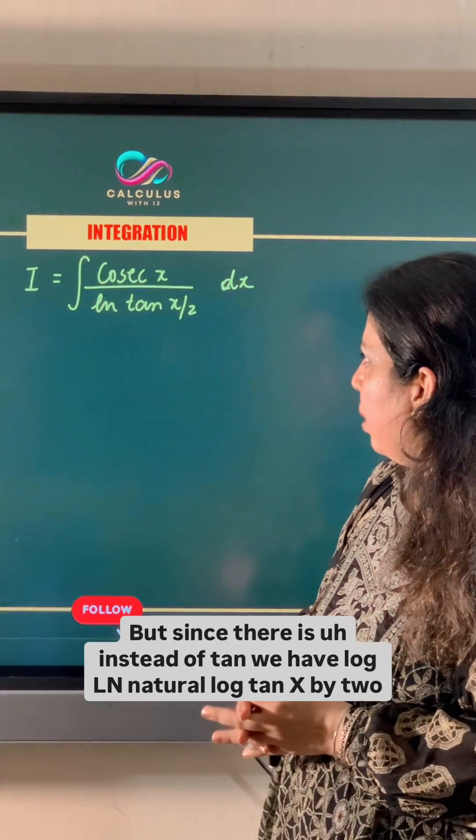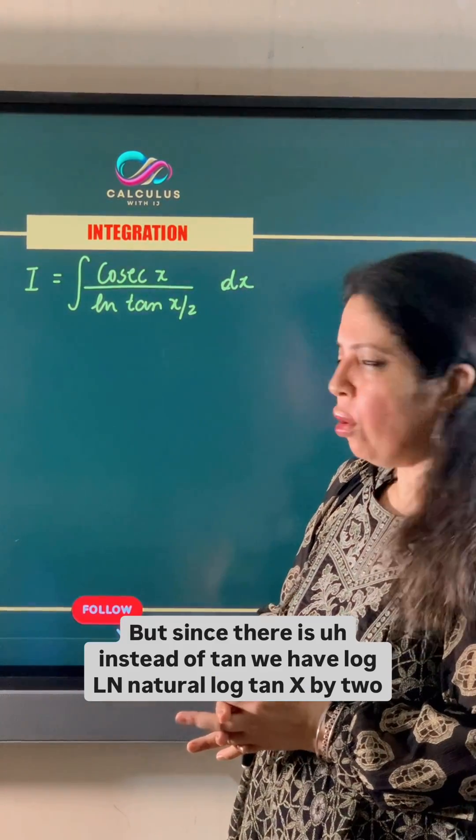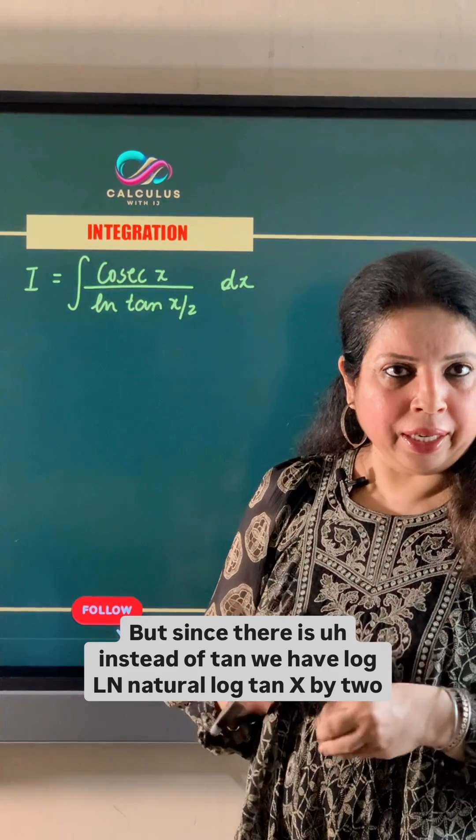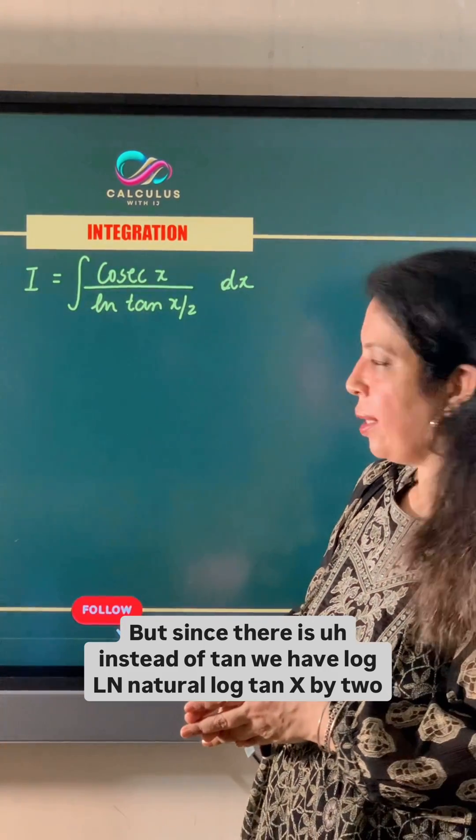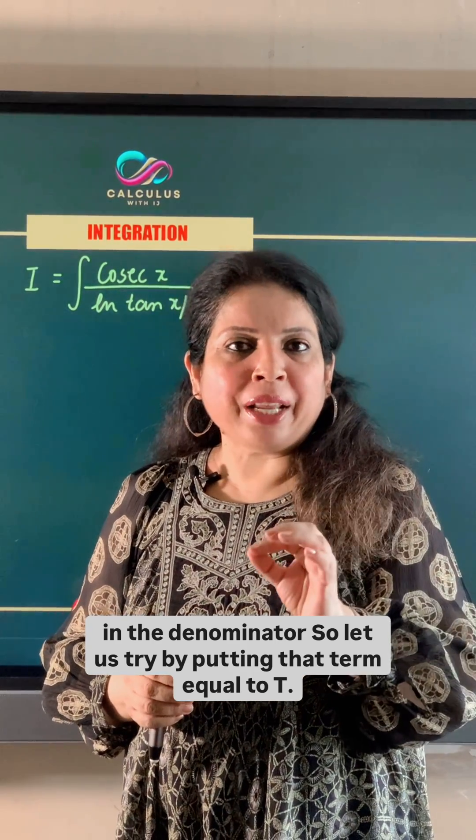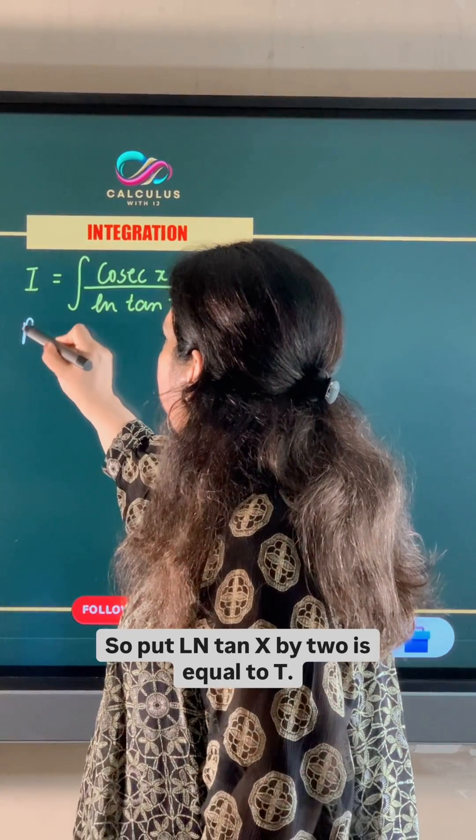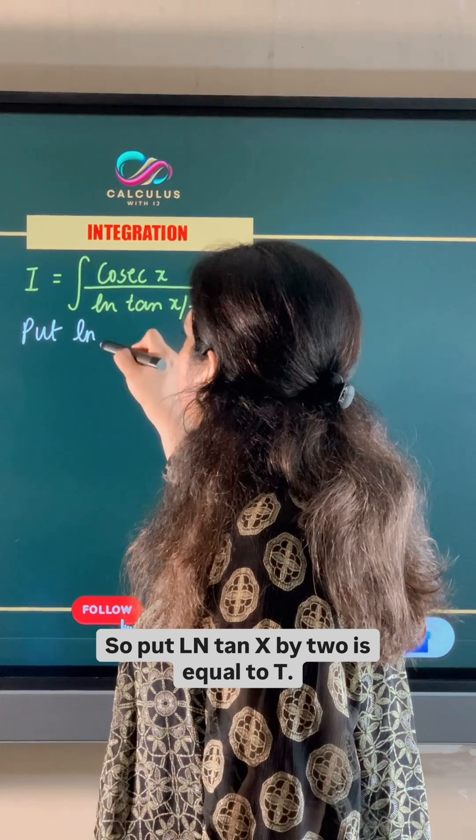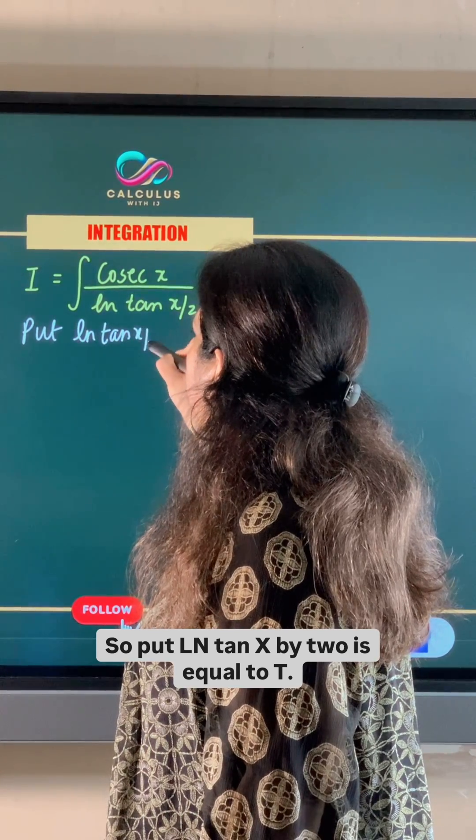But since there is instead of tan, we have natural log tan x by 2 in the denominator. So let us try by putting that term equal to t. Put ln tan x by 2 is equal to t.